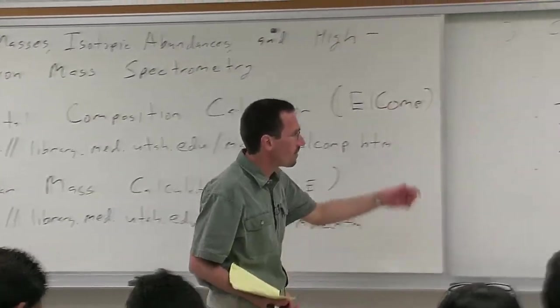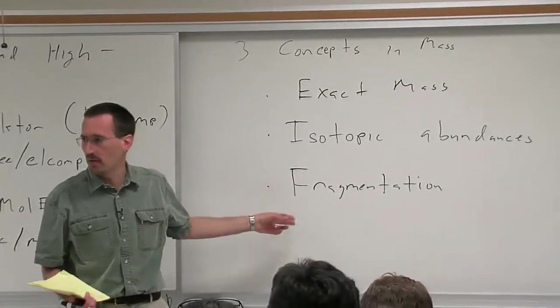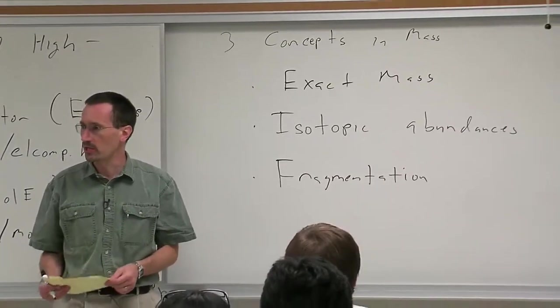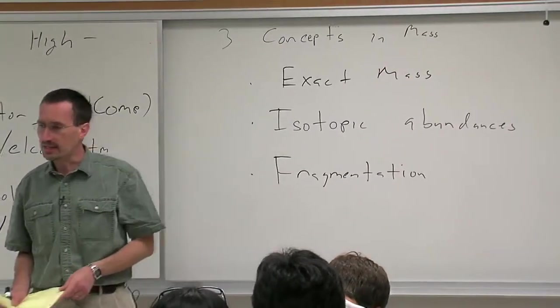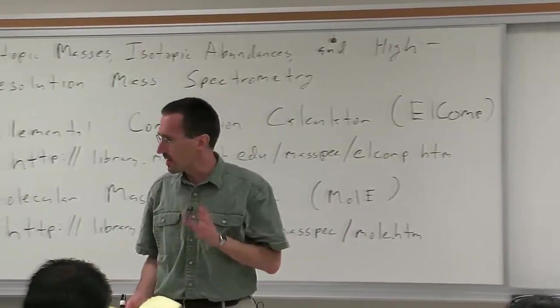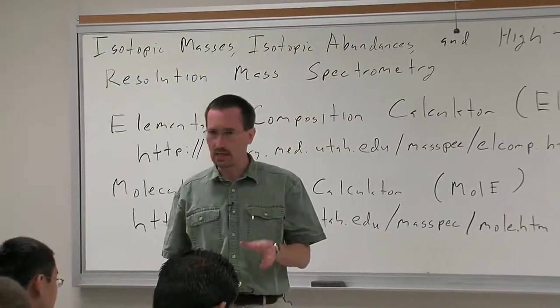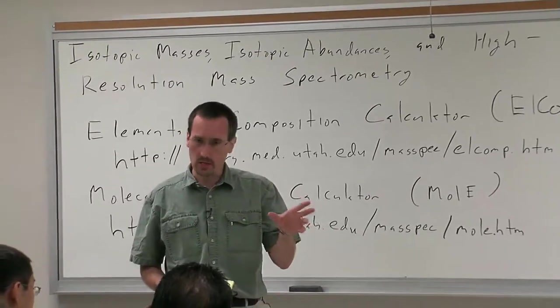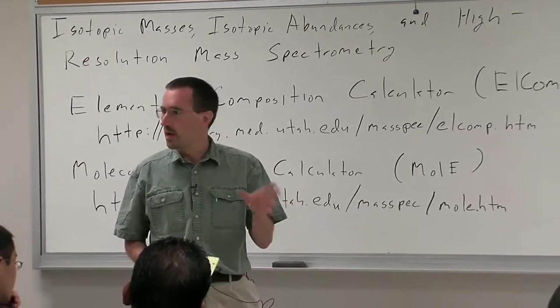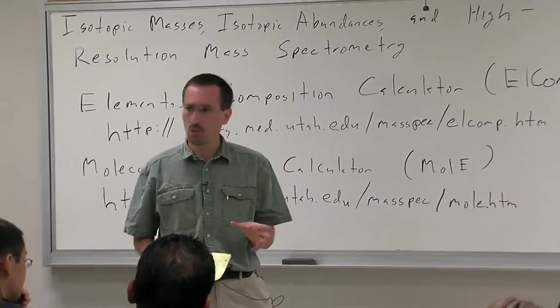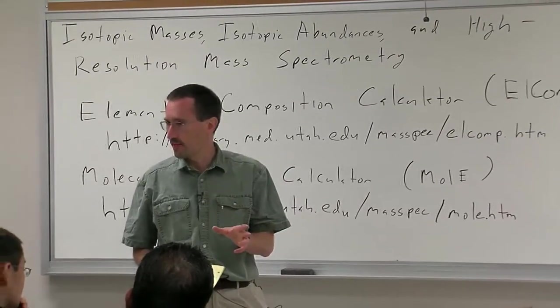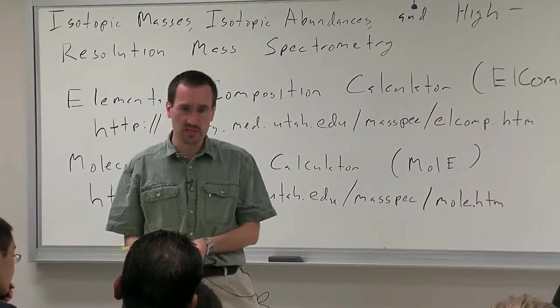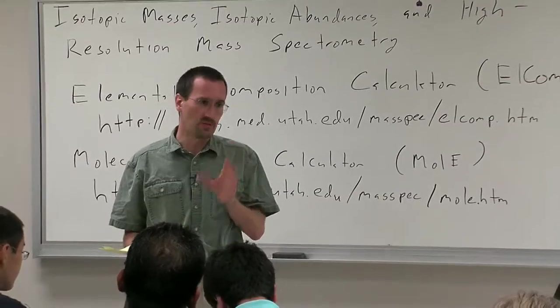When we talk about fragmentation in EI mass spec we'll be talking about fragmentation of radical cations. In soft ionization techniques you don't generally get a lot of fragmentation, so it isn't super important there. But in EI mass spec where you have tons of fragmentation, you often can't even see your molecular ion. It's very important.